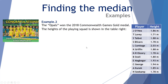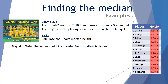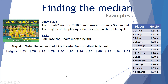Example number two: The Opals, which is Australia's national basketball team, won the 2018 Commonwealth Games gold medal and here are the heights of all the players. On this occasion we want to work out the Opals' median height. Step one is to order the values — that is the heights — from smallest to largest. There we have the heights of all the Opals from shortest to tallest.